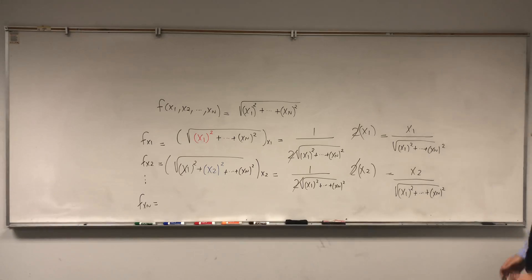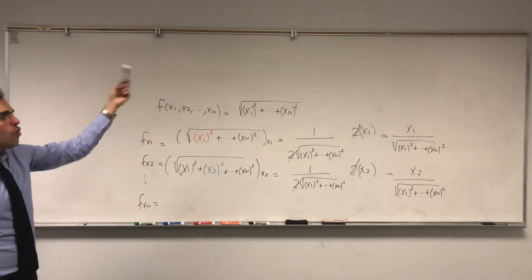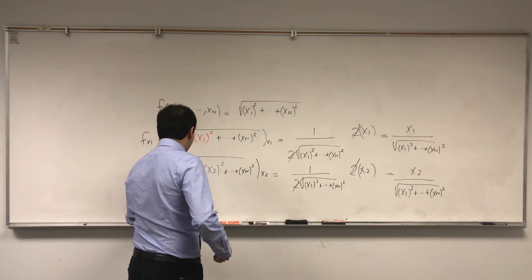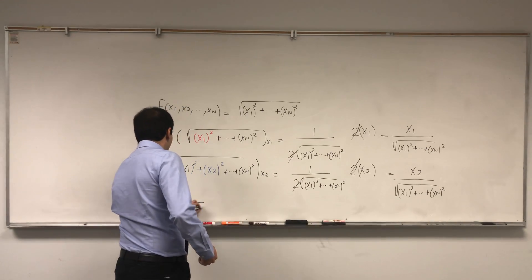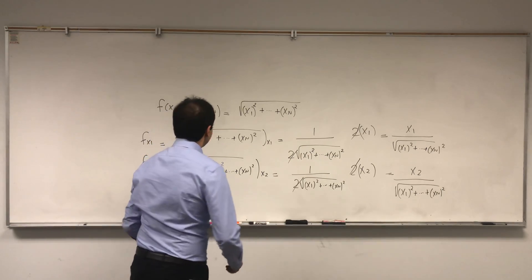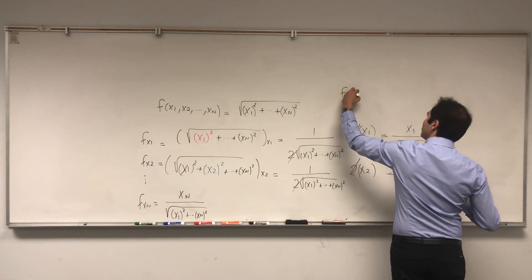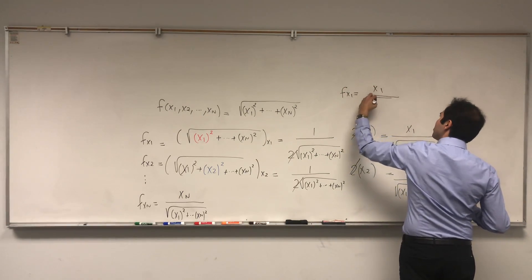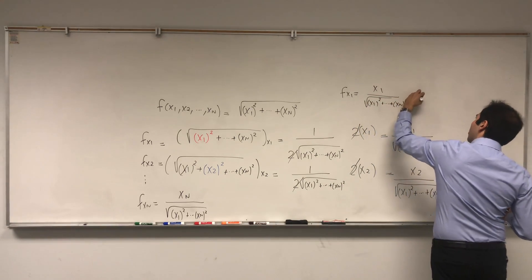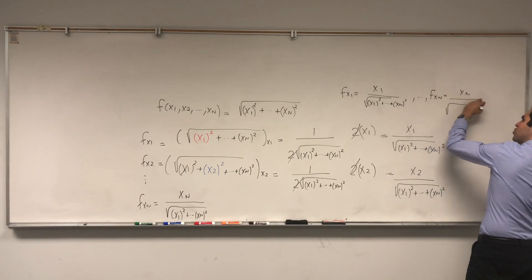Okay, and of course you can see the pattern now. So fx1 is x1 over this square root, fx2 is x2 over this square root, so fxn is xn over this square root. So again, just to record: fx1 is x1 over the square root of squares, and then up to fxn is xn over the square root of squares.